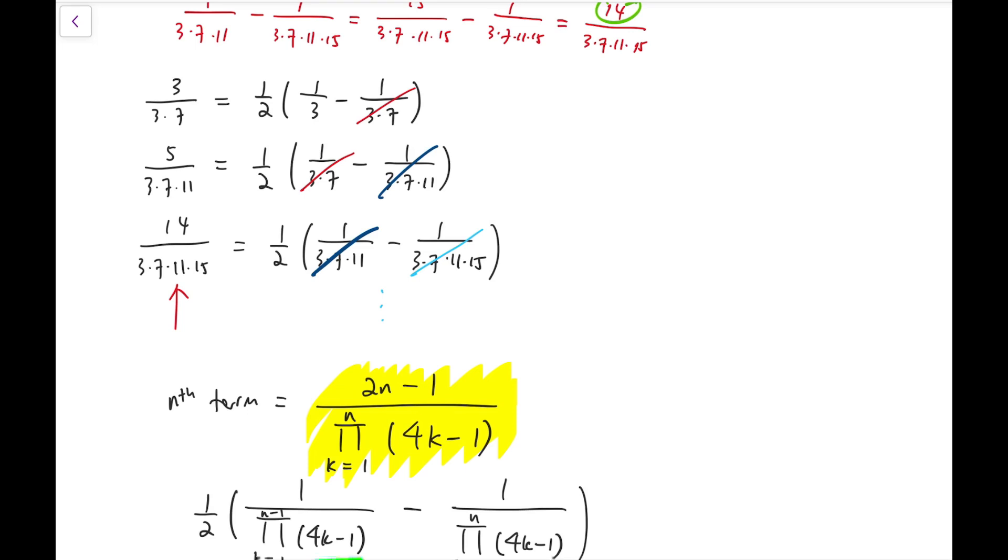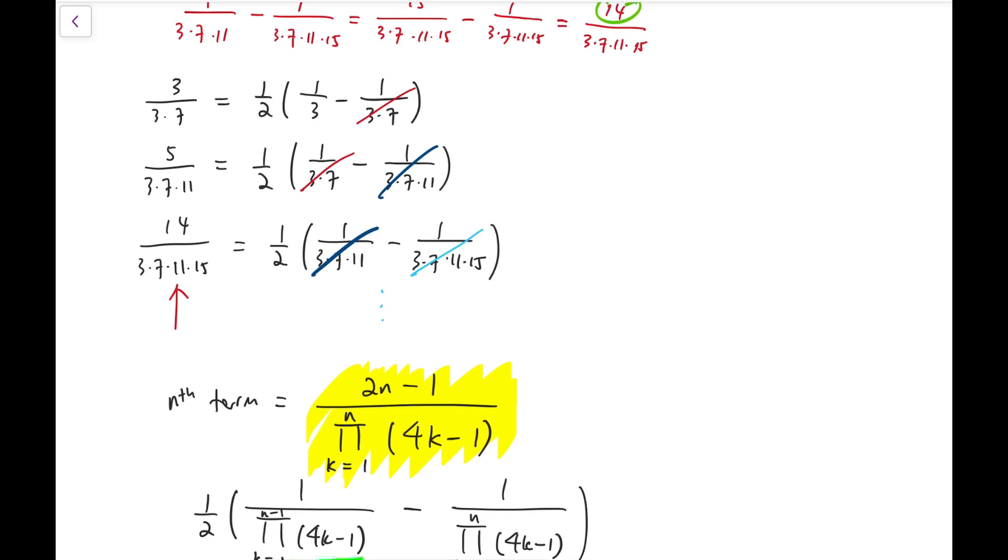Now, from this, we can safely conclude that our final answer is just the first term, 1 over 3, because these kind of splitting and telescoping sums only apply from the second term to the end, up to infinity. So, we've actually ignored the first term.